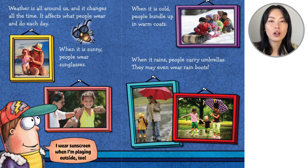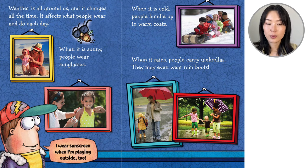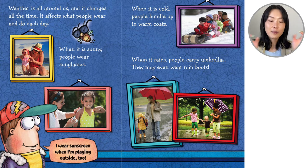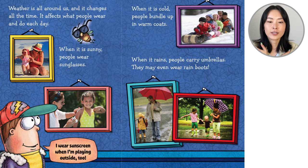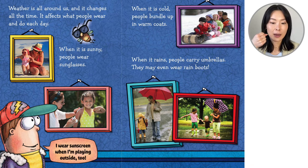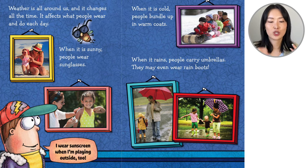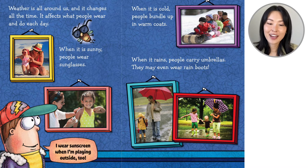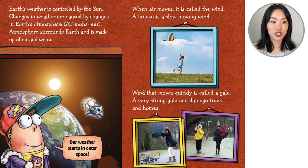Weather is all around us and it changes all the time. It affects what people wear and do each day. When it's sunny, people wear sunglasses. When it's cold, people bundle up in warm coats. When it rains, people carry umbrellas and they may even wear rain boots. Buzz says, I wear sunscreen when I'm playing outside too. So why does the weather change?